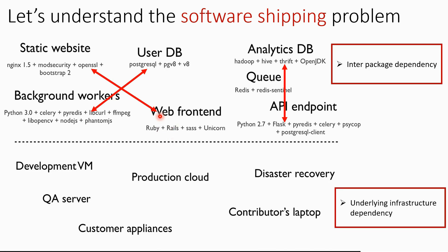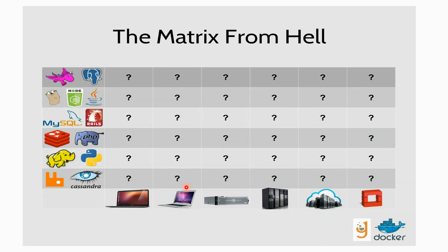There is also a dependency on the underlying infrastructure. For example, the web UI may work on your development VM but may not work on the production cloud. In software terminology, this is called the 'matrix from hell' — developers keep tracking which component works where and what the dependencies are between components. This is a very complex task.